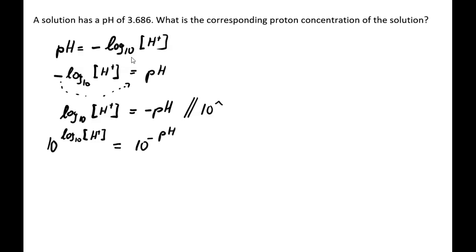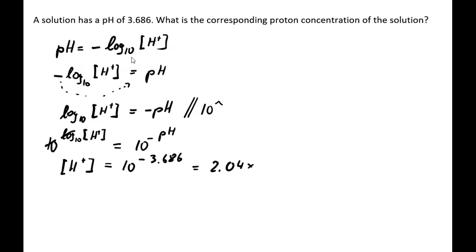We know that 10^(log₁₀) and log₁₀ cancel each other out, so the left-hand side simply becomes the proton concentration. This equals 10 to the power of negative pH. With a pH value of 3.686, we put this into a calculator and get a value of 2.04 times 10 to the power of negative 4.